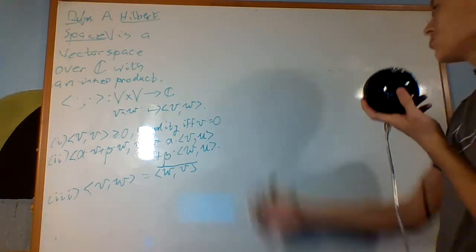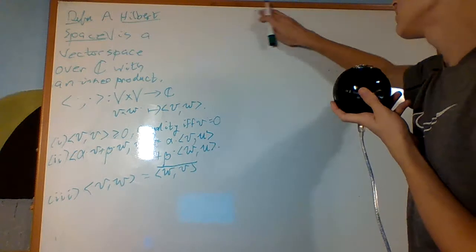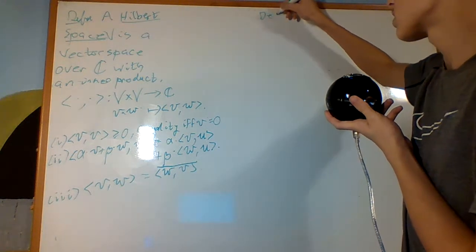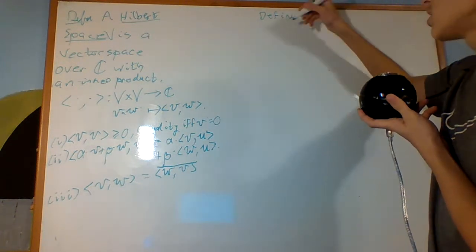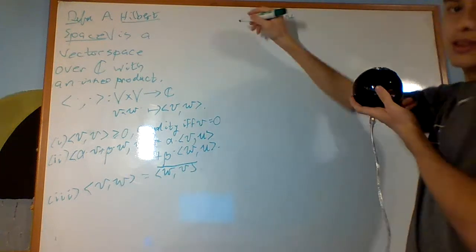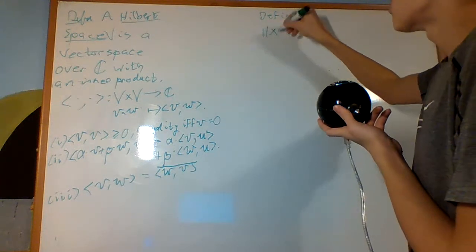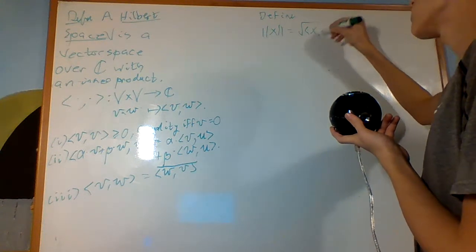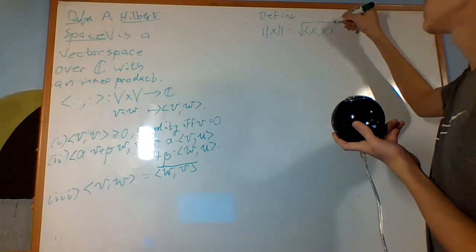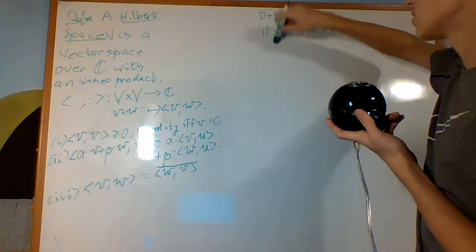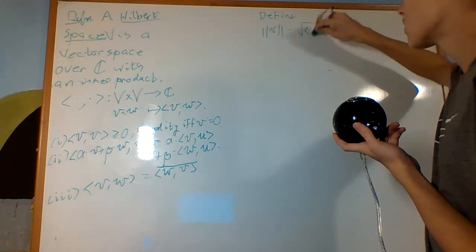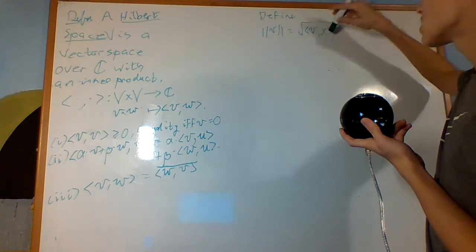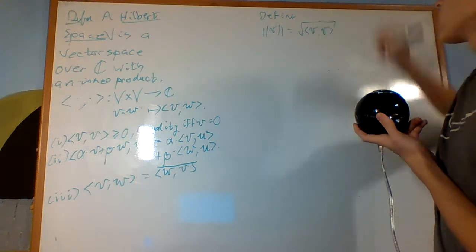Okay, now what we define. We define the norm of X to be the square root of the inner product with X in itself, or V I'll call it.